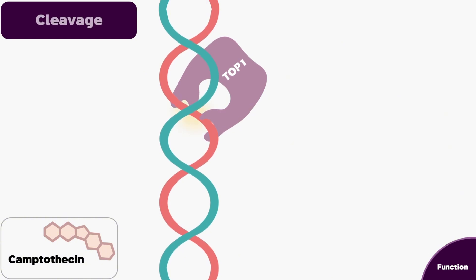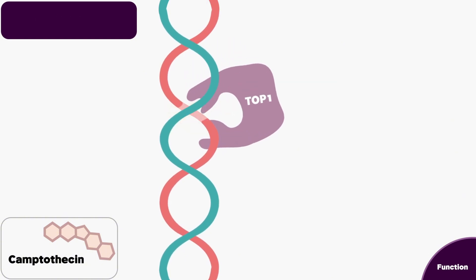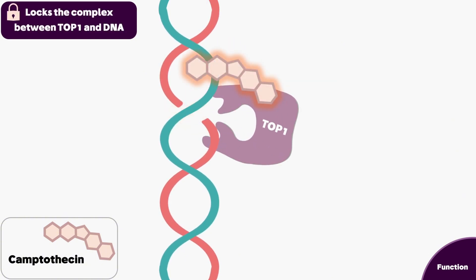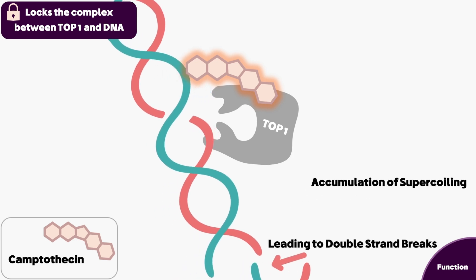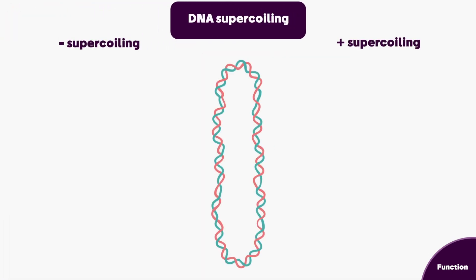Let's see how and when the topo 1 inhibitors act. Starting with a drug named camptothecin: upon cleavage, camptothecin binds with both the DNA and the topo 1 enzyme, locking them in the cleavage complex. Subsequently there will be an accumulation of supercoiling downstream of the breakage site, eventually resulting in double-strand breaks.